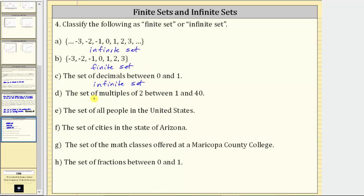Next, we have the set of multiples of two between one and 40, which would be two, four, six, eight, and so on, all the way out to 40. There are exactly 20 multiples of two between one and 40. Because we know the exact number of elements in the set, this is an example of a finite set.